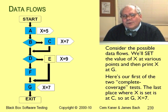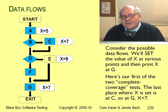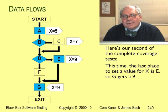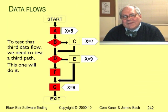In the test shown on this diagram, the set-used pair that's active is CG. We set X to 5 at A, but we reset it to 7 at C. When we print X at G, we print a 7. In the second test, EG is a set-used pair. Between these two tests, we get complete branch coverage, but we don't have a test for the AG set-used pair. For that third set-used pair, we need a third test.